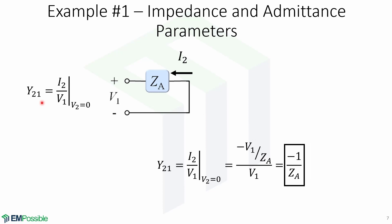For Y21, we find the ratio of I2 to V1 when V2 equals 0. This leads us to the same circuit that was used to find Y11. I2 equals V1 over ZA, which means I2 equals minus V1 over ZA. Simplifying this gives us minus 1 over ZA.